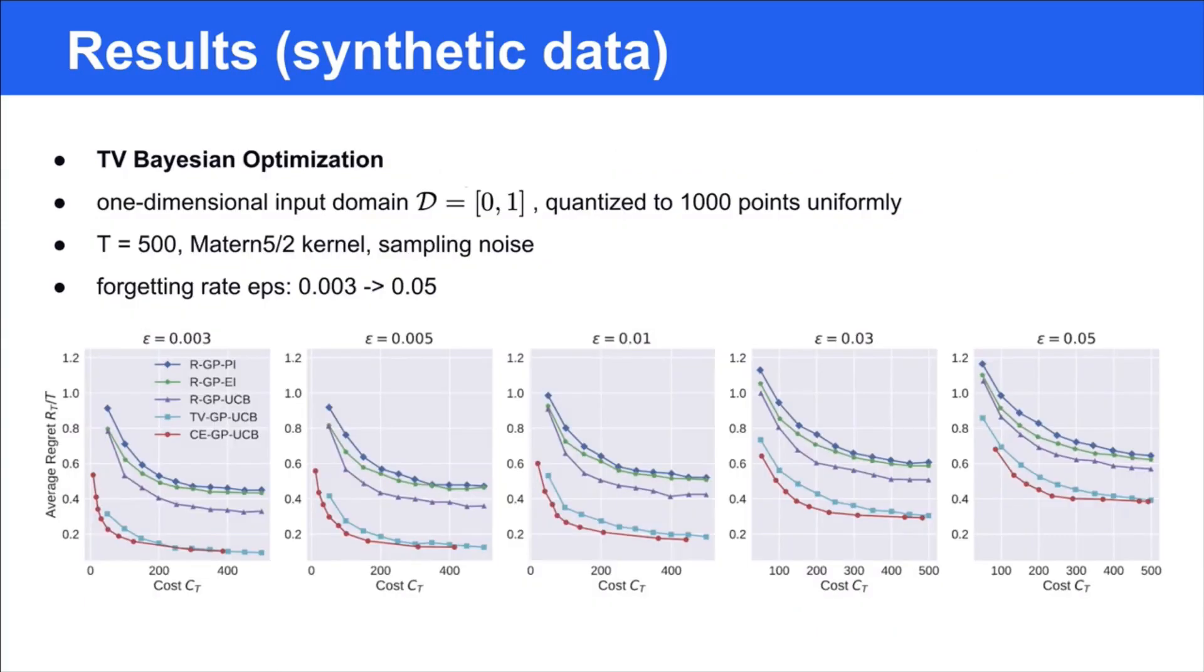We also consider another synthetic dataset where the candidates are correlated. In this setting, we follow the previous time-varying GP-UCB assumptions and use a transition function to model the variation of function. The epsilon denotes the forgetting rate that controls the variation of the unknown functions. The larger the epsilon is, the faster the function will change. The figure shows the tradeoff curves between the average regret and query cost for different algorithms. The performance is averaged over 50 independent trials. We observe that our method suffers from a minor regret loss when using 50% query cost, whereas the other baselines with Bernoulli's strategy lead to a larger performance loss.